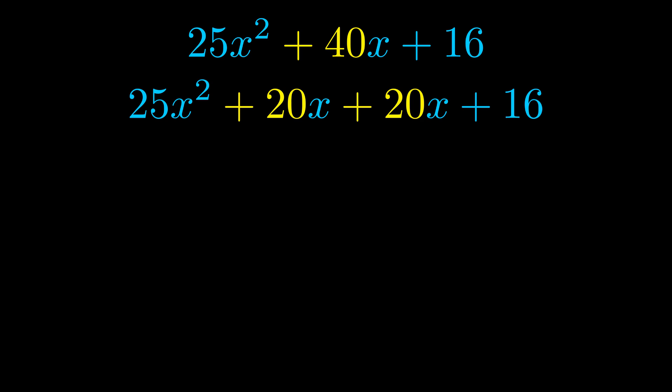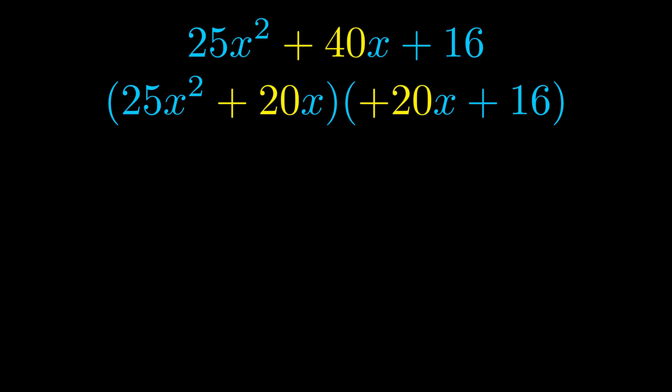Once we've done this we go ahead and we put parentheses around the first term and the last term. And we do that so that we can take the greatest common factor out of both terms. We can see the greatest common factor is now outside in green.